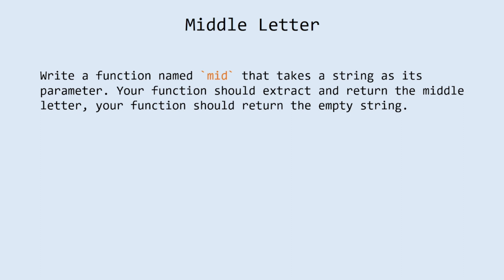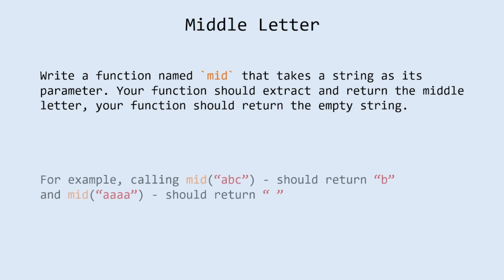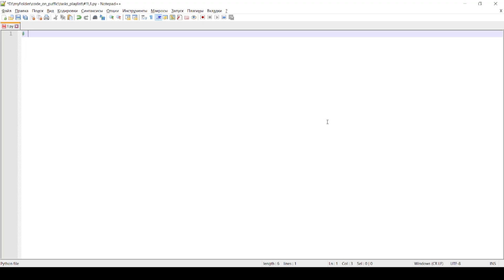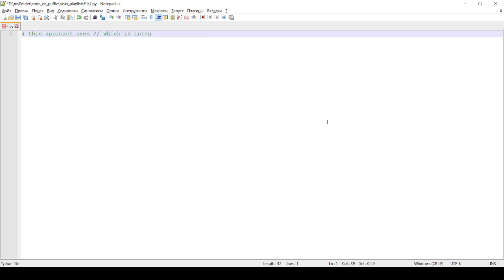Next task is called middle letter. Explanation: write a function named mid that takes a string as its parameter. Your function should extract and return the middle letter, or the empty string if the length of the string is odd. For example, calling mid with the string 'abc' should return 'b', and mid with the string 'fora' should return empty. This approach uses double slash as integer division in Python.